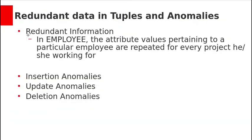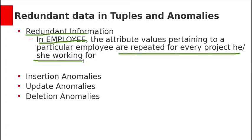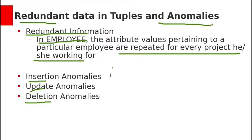The main problem with the above design is redundant data — employee data is repeated for every project he or she works on. A direct consequence of this redundancy is data anomalies. In English, anomaly means something abnormal. In DBMS, data anomalies are problems that occur in a poorly planned, unnormalized database when inserting, updating, and deleting data.